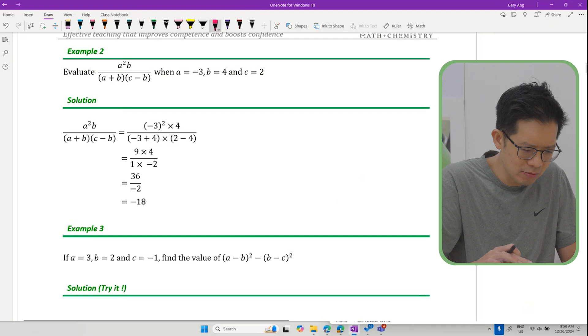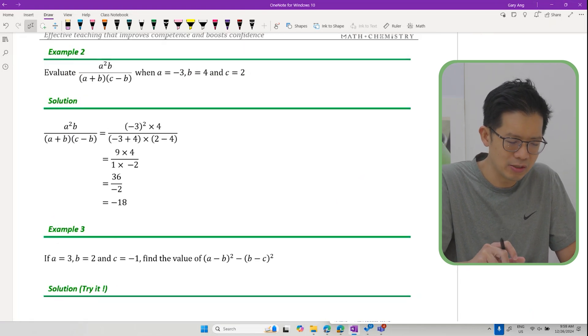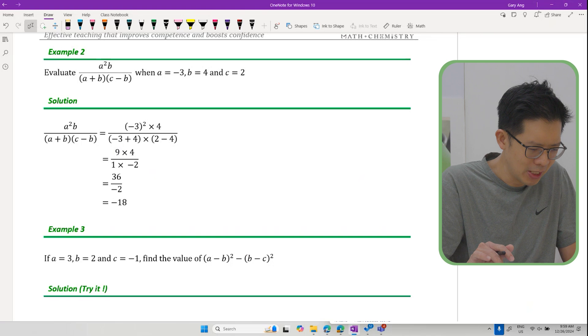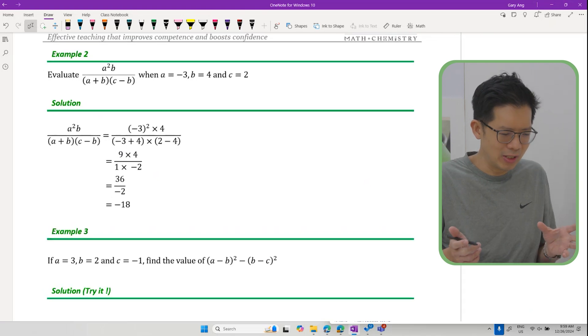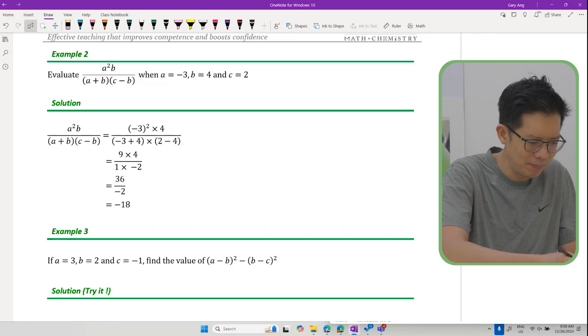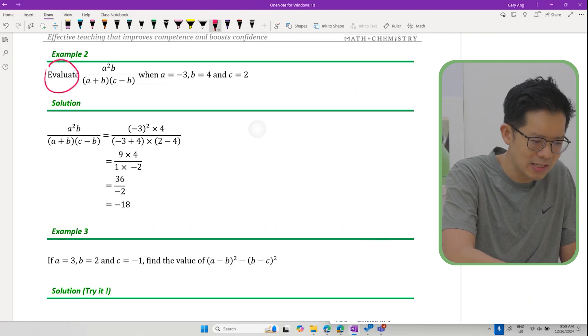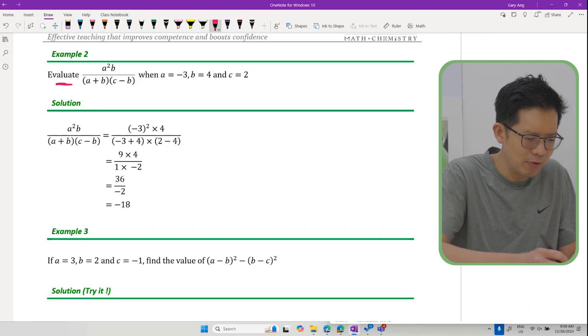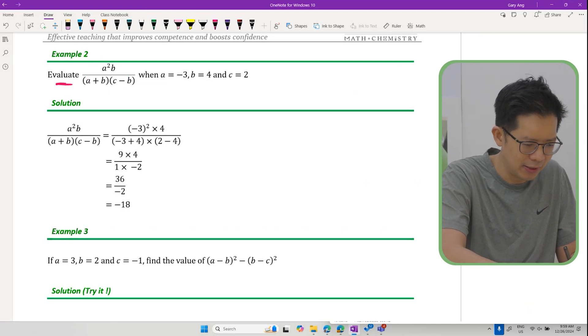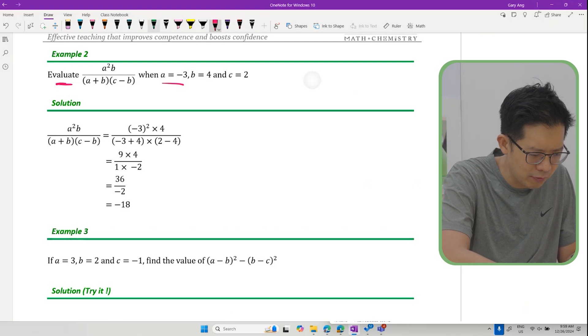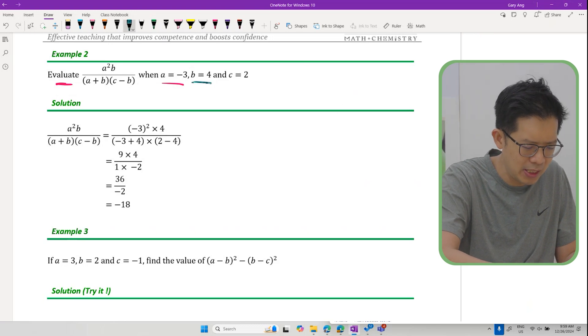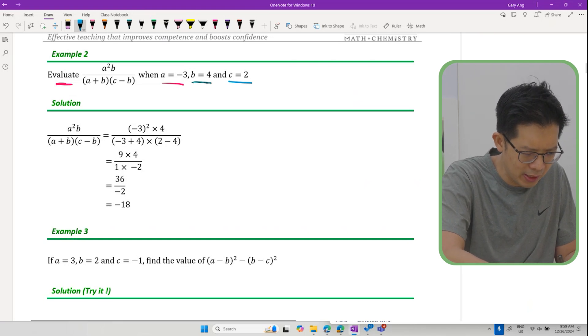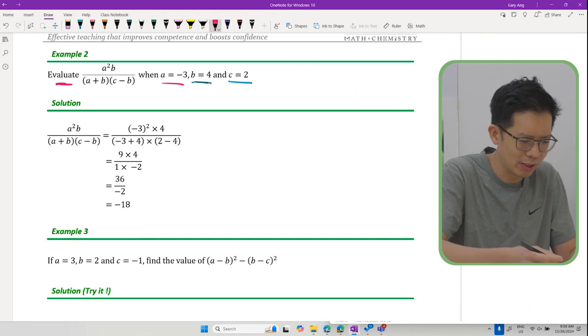Another type of question that usually pops out in sec 1 algebra, which the picture earlier on encompasses. Basically, evaluate literally means find a value - it comes from the word value. Evaluate means this is a value we're supposed to find when a is negative 3, b is equal to 4, and c is equal to 2.